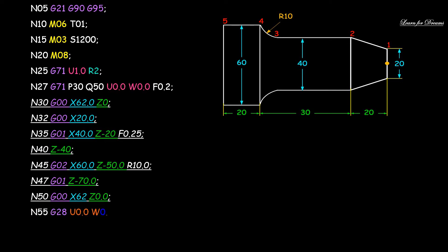Then N55 G28 U0 W0. Here G28 is home position. Then N60 M09. M09 is coolant off.